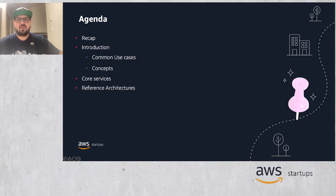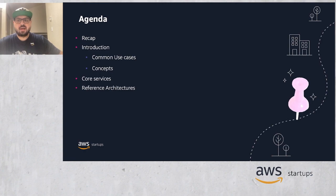Before we get started, I want to go over our agenda for this video. To start with, I will recap the content discussed in the previous video, which is 'Start Your Journey with Serverless Data Lakes.' Following that, common use cases for streaming analytics will be discussed. Next, the value of streaming data and how getting real-time insights may benefit businesses will be described. After that, I will talk about core AWS services for data ingestion, storage, and processing of streaming data. Finally, I will explain reference architectures to address different challenges across different business verticals.